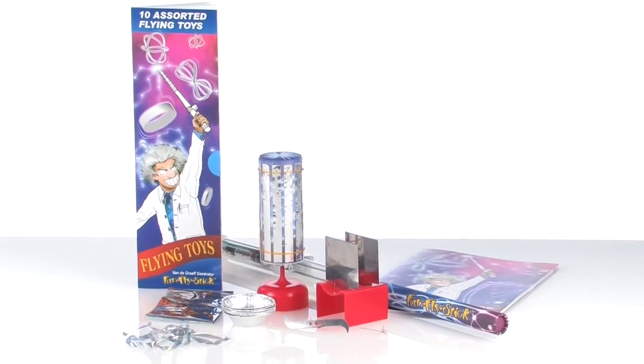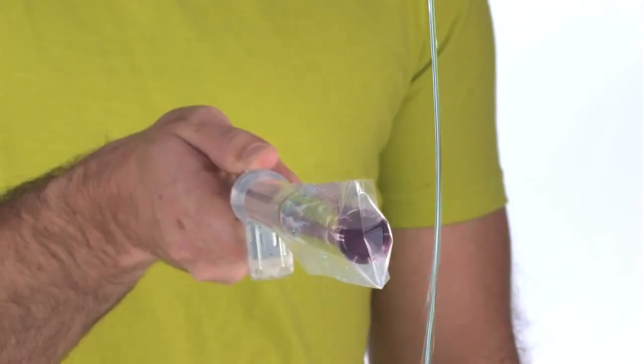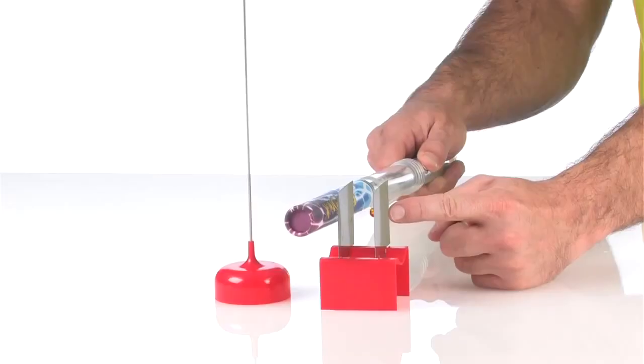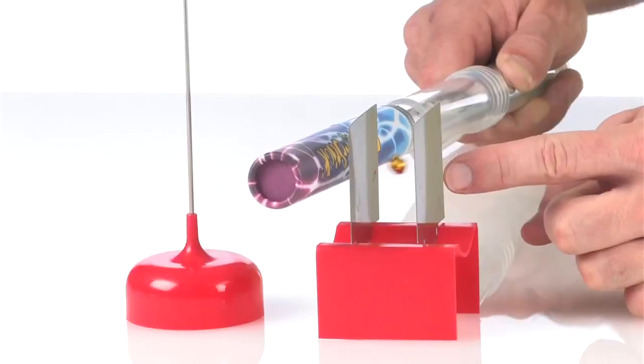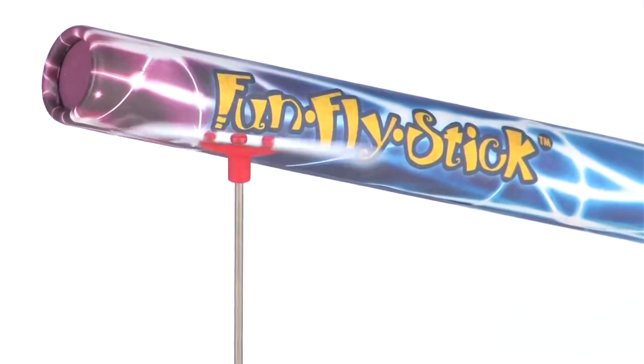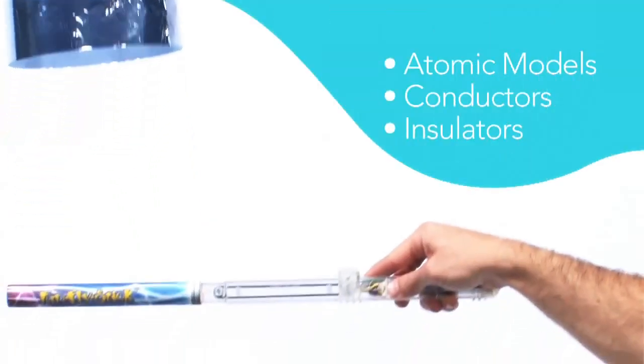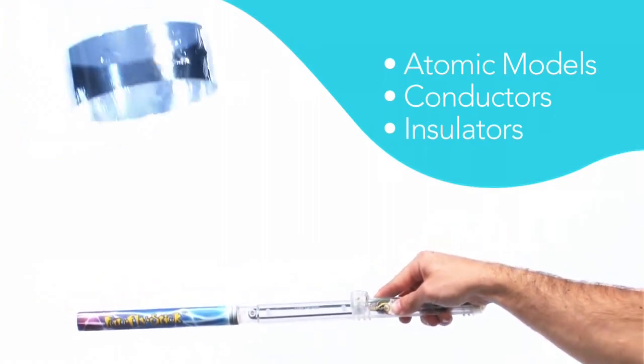The Fun Fly Stick science kit includes 25 pieces and props. You can bend water, learn how to create an electrostatic drummer, run an ion motor, or make objects levitate. All the while learning about atomic models, conductors, and insulators.